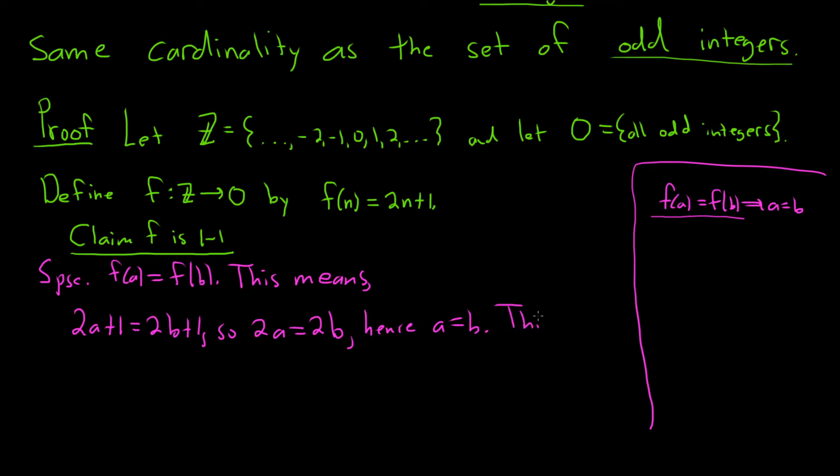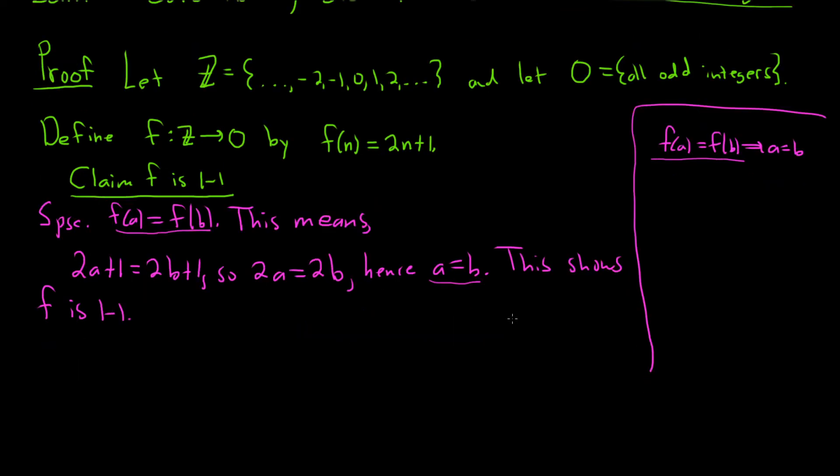So this shows f is 1 to 1. Because we started with f of a equals f of b, and we showed a is equal to b. So now we just have to show it's onto, so let's do that part. This part might be a little bit harder. So claim f is onto.